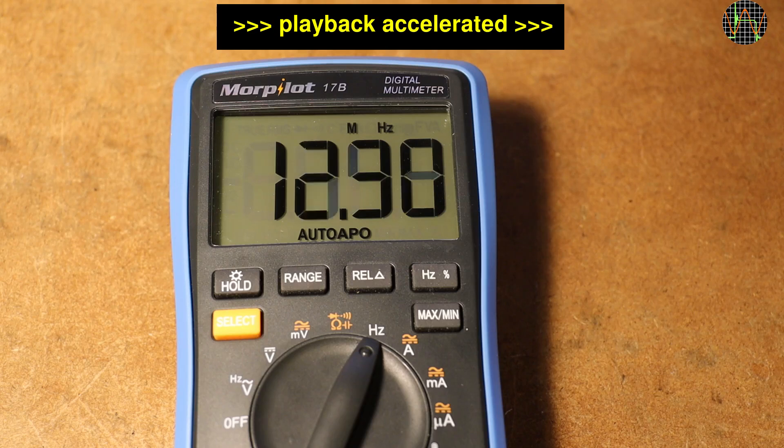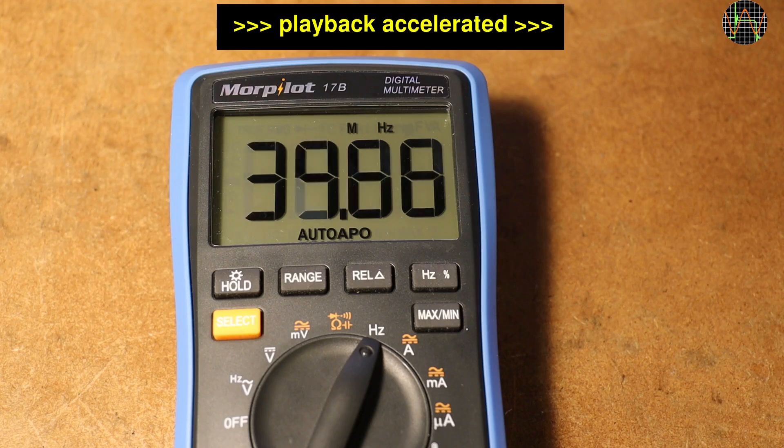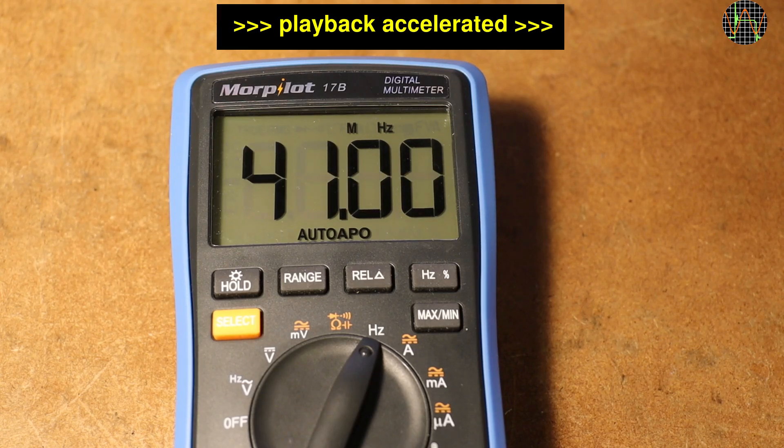For frequency, the Morpilot is rated to 20 MHz with 1V RMS. In my test, the Morpilot has no problem to measure up to 41 MHz with that input voltage which is excellent.